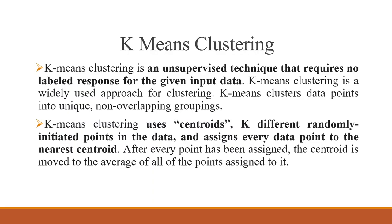K-Means Clustering is a widely used approach for clustering. K-Means clusters the data points into unique non-overlapping groups. It uses a centroid — K differently randomly initiated points are picked up in the data and every data point is assigned to the nearest centroid. After every point has been assigned, the centroid is moved to the average of all points assigned to it.